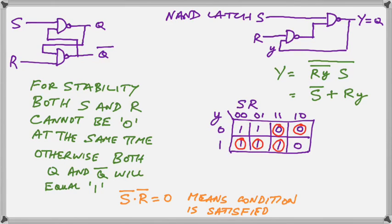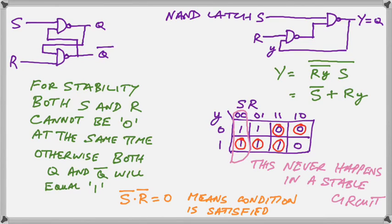So there is our transition table, which we have just produced using the Y equal to S bar or RY. And the column that never happens in this situation is where we have two 0s on both S and R at the same time. So that column will never occur in a stable circuit.